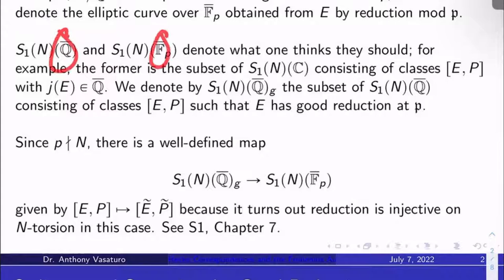The first guy though can be identified with the subset of S₁(N)(ℂ) consisting of classes of enhanced elliptic curves [E, P]. So here P is an N torsion point of E, remember, with J invariant in Q̄.